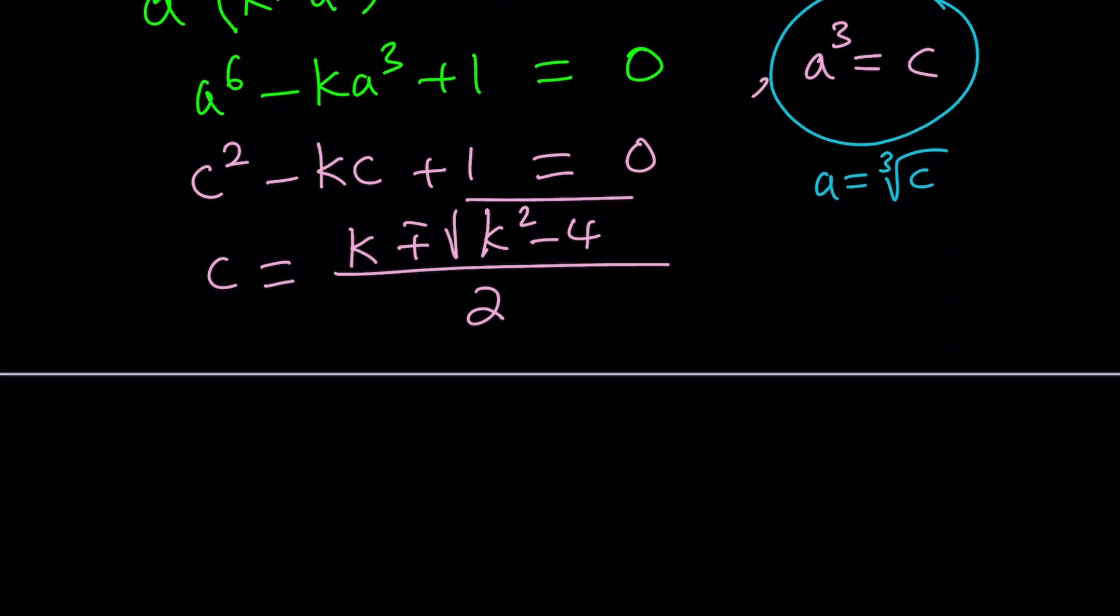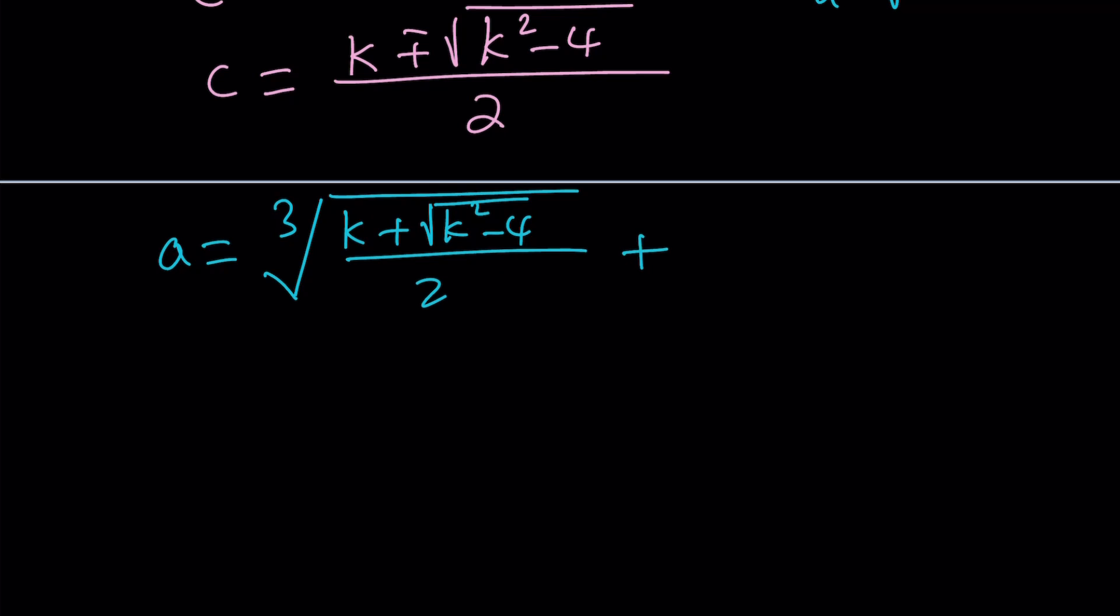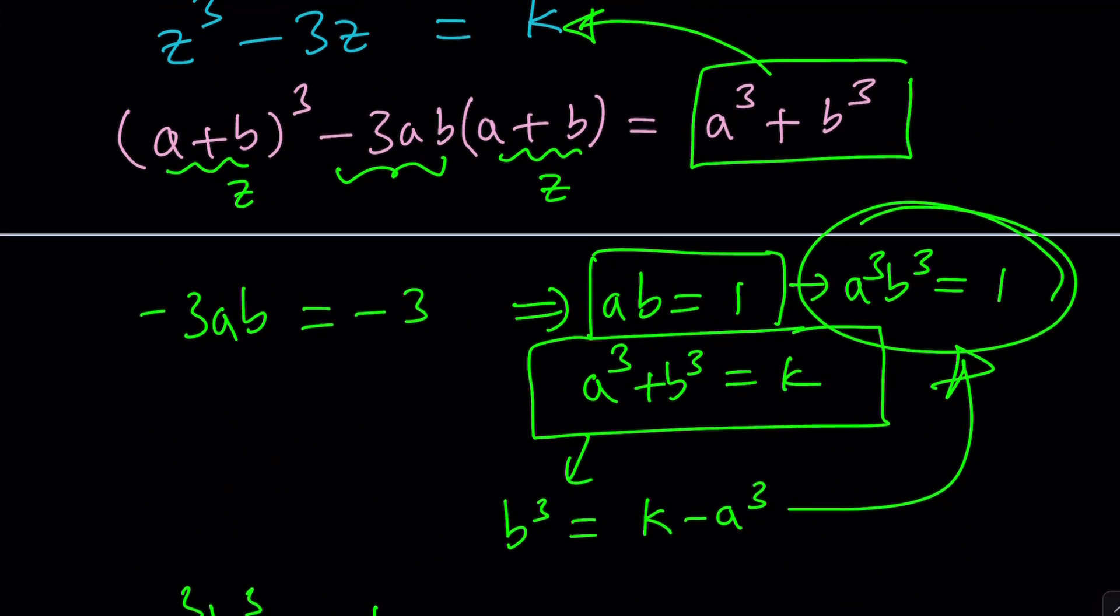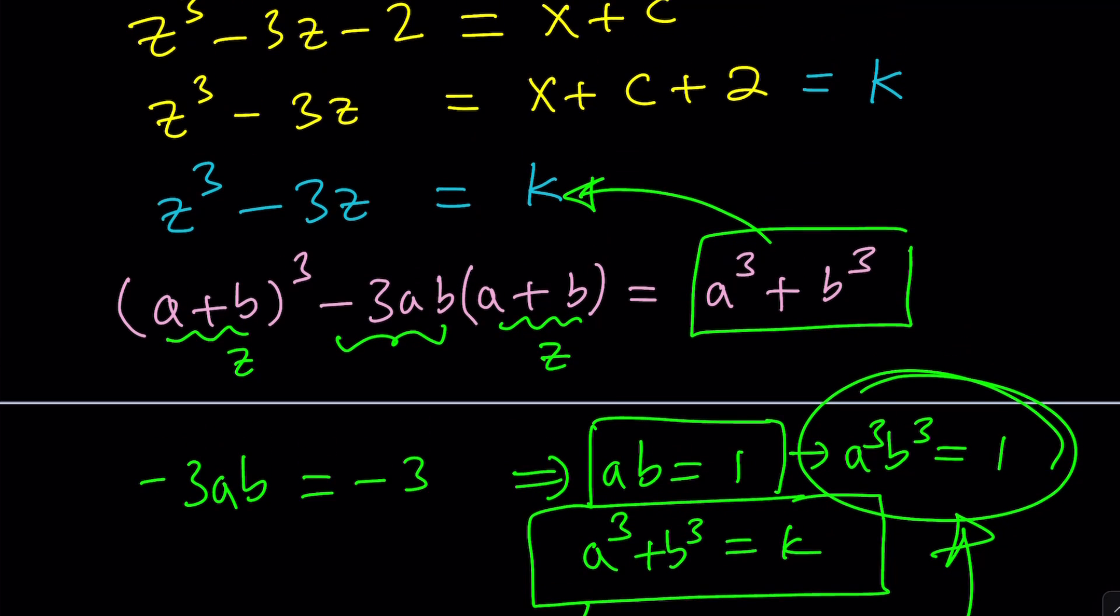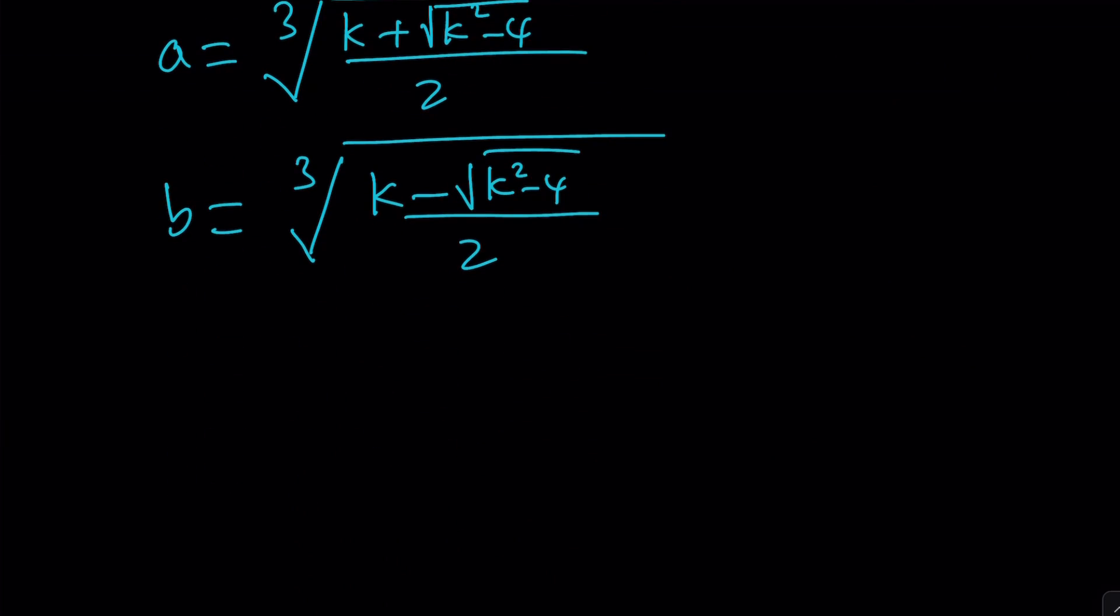So from here, we get the following. I can take a to be the cube root of c, which is the positive one. This is a, and then b is going to be the negative version. Let me go ahead and write them down first, and then I'll add them. b is going to be the other one, the minus version. And again, if you switch them around, a plus b is going to be unchanged. So a and b are found from those equations. And now what I need to do is find z using a plus b, because z is equal to a plus b.